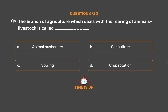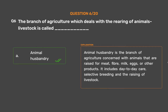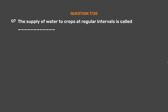The correct answer is Option A: Animal husbandry. Animal husbandry is the branch of agriculture concerned with animals that are raised for meat, fiber, milk, eggs, or other products. It includes day-to-day care, selective breeding, and the raising of livestock.